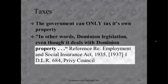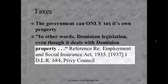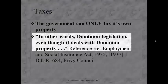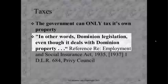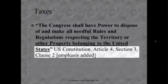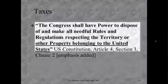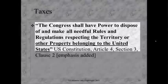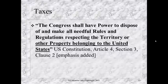This is actually a Canadian court case — Reference Re Employment and Social Insurance Act, 1935 — from the Privy Council. Dominion legislation, even though it deals with Dominion property, means federal legislation deals with federal property. And the U.S. Constitution, Article 4, Section 3, Clause 2 says Congress shall have power to dispose of and make all needful rules and regulations respecting the territory or other property belonging to the United States. So if they're taxing you, it's because they think you are their property.